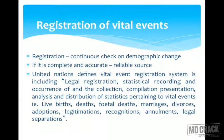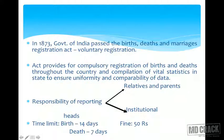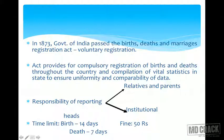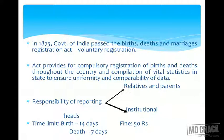In 1873 the Government of India passed the Births, Deaths and Marriages Registration Act, which initially had voluntary registration. The act now provides for compulsory registration of births and deaths throughout the country and compilation of vital statistics in each state, to ensure uniformity and comparability of data.